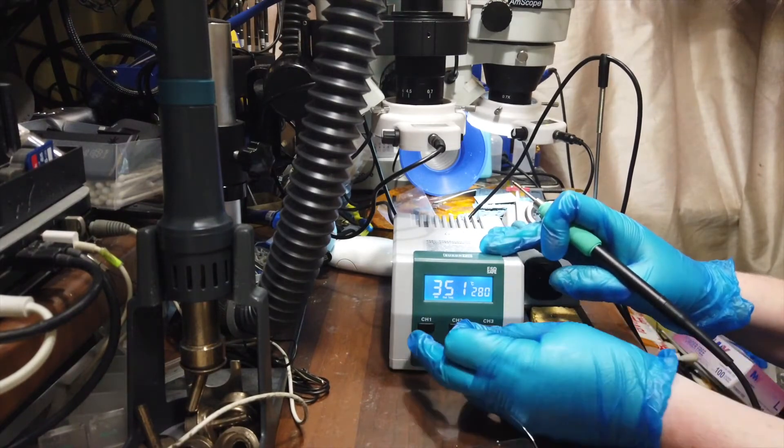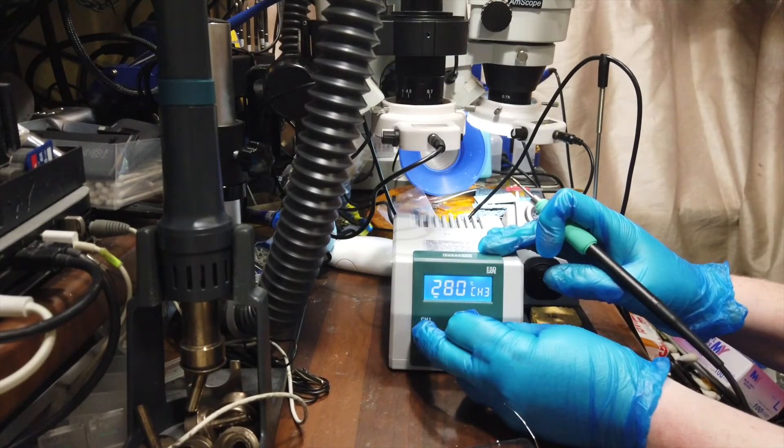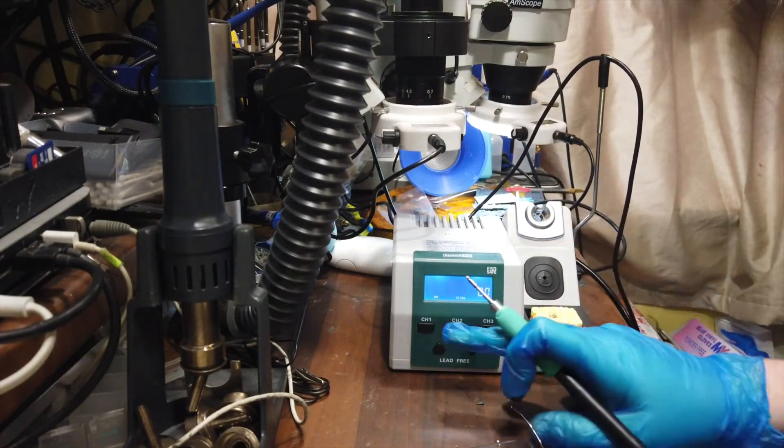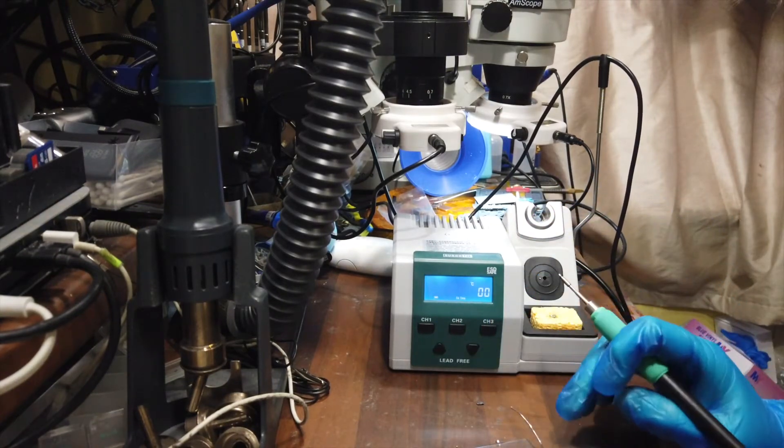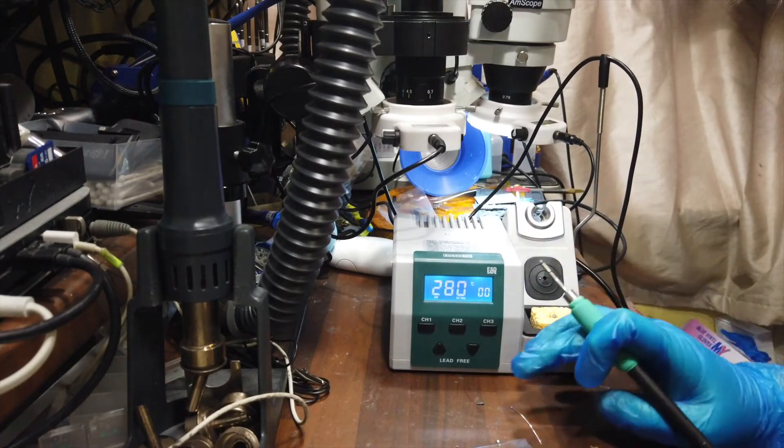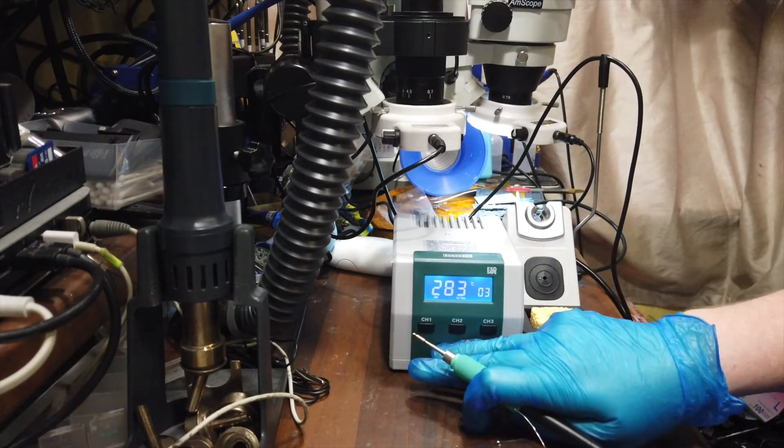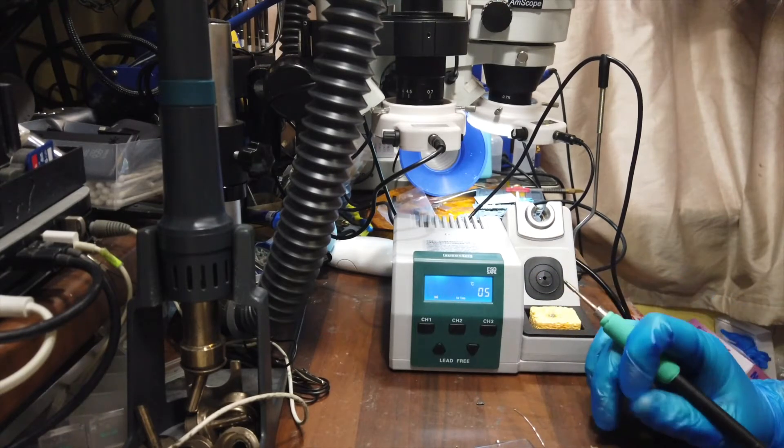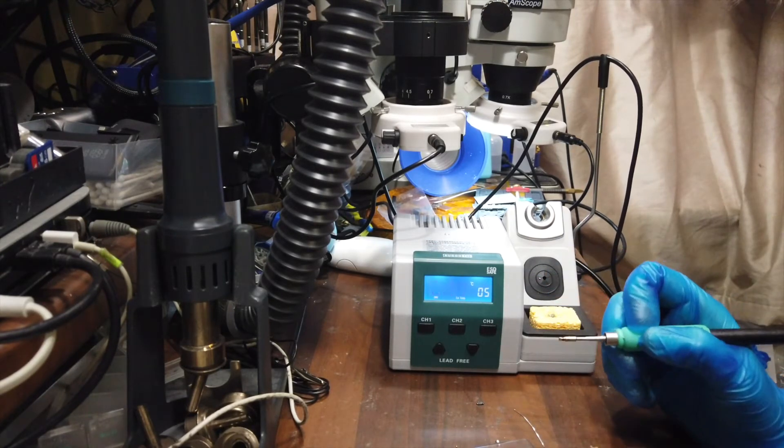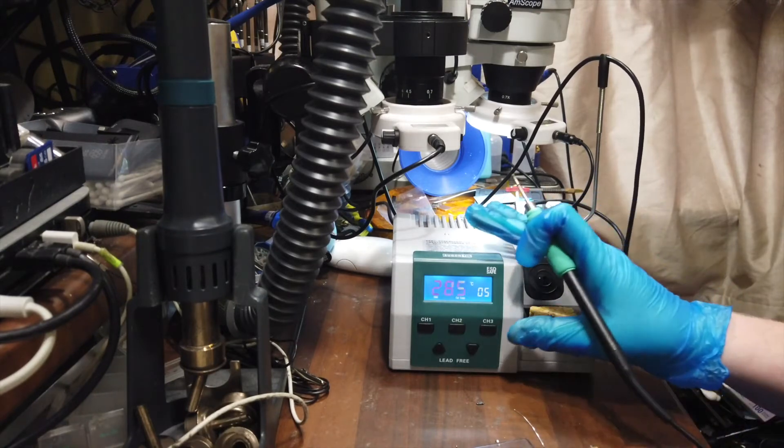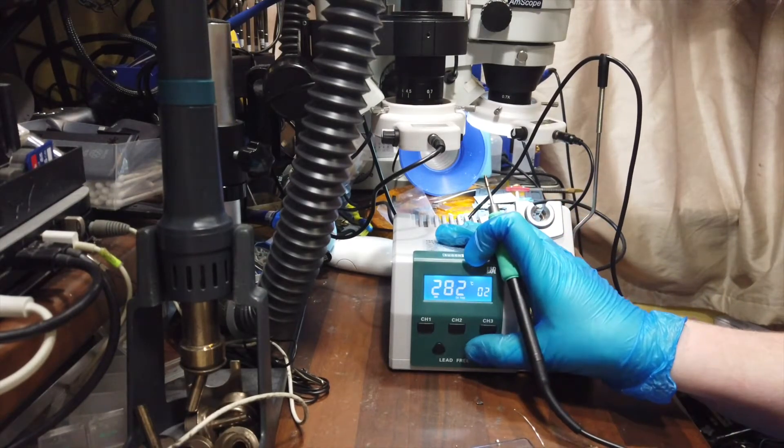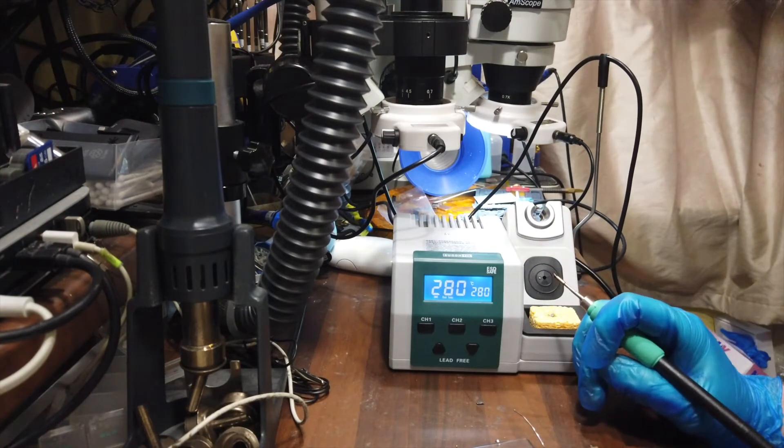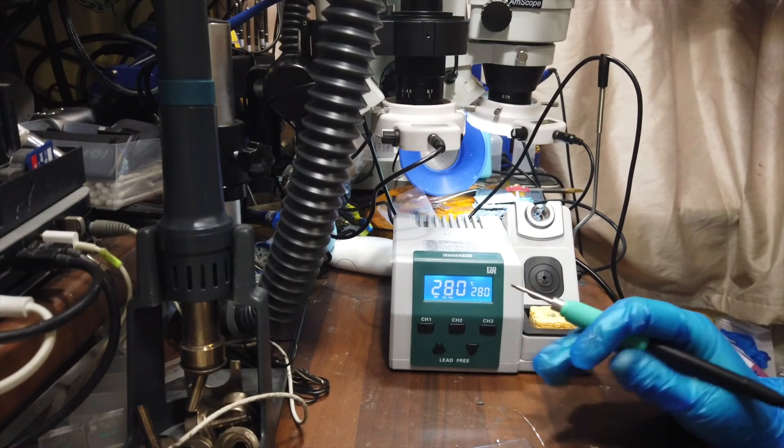Also on this station you can hold channel 1 and 3 together like you can on the Quick, and it puts it in calibrate mode. This allows you to finely tune the temperature settings. So if you go up, I've gone up here it's 5 offset temperature. If you've got a soldering tip thermometer you can measure the end of the tip and then program in the settings. Which is pretty cool actually. You can sort that out.